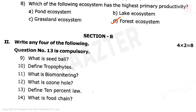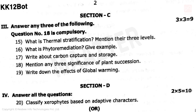Next, Section B has 6 questions; question number 13 is compulsory. The questions include: what is seed ball and thermal stratification — mention three levels; what is phytoremediation — give an example; write about carbon capture and storage; mention any three significance of plant succession; and write down the effects of global warming.